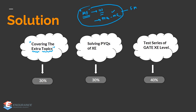After covering the ME syllabus and extra topics, focus on previous year questions of XC. Don't take this lightly — XC previous year questions are high-level and will help you a lot, not only in XC preparation but also in ME preparation. Covering the extra topics accounts for 30 percent of the solution, solving previous year questions is another 30 percent, and the remaining 40 percent is taking XC-level test series — not ME test series, but XC mock tests.